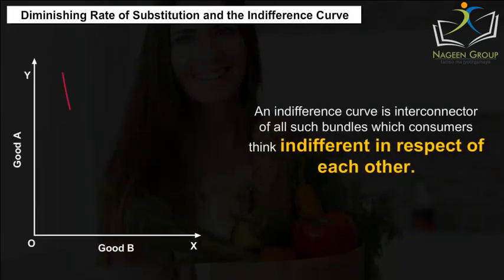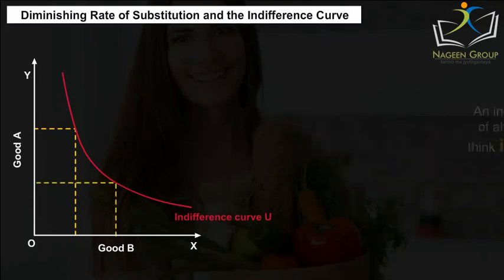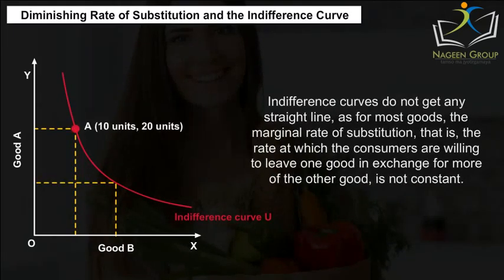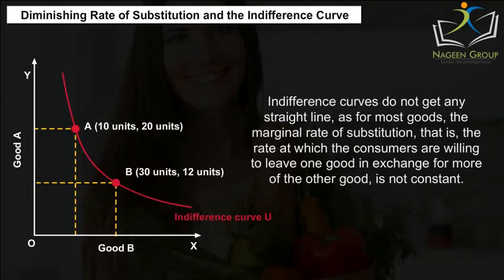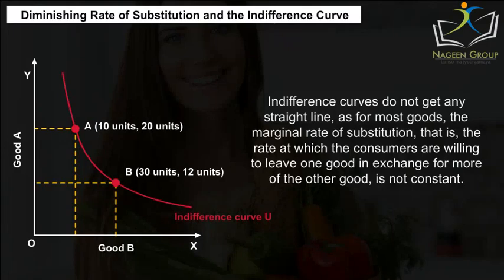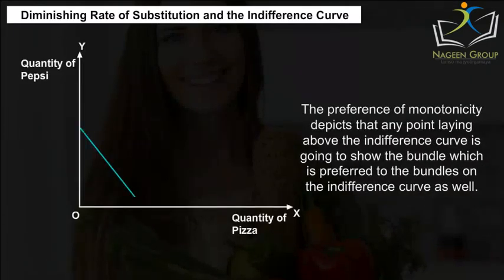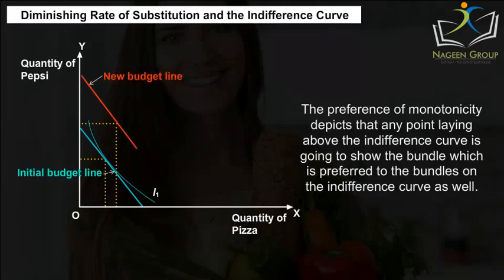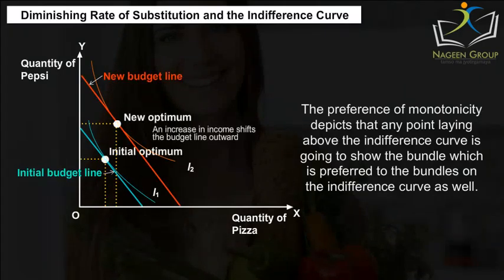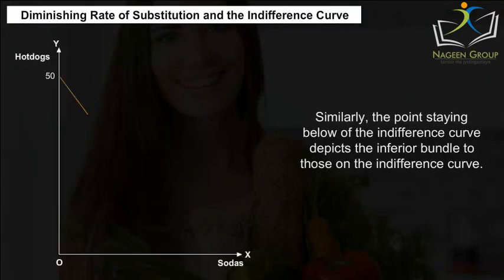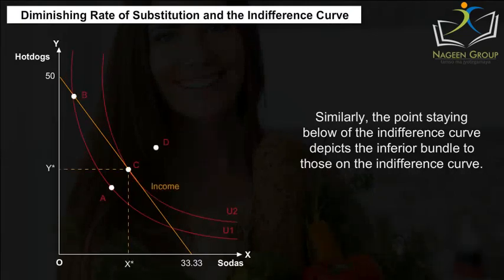An indifference curve is the connector of all such bundles which the consumer considers indifferent with respect to each other. Indifference curves are not straight lines, as for most goods the marginal rate of substitution — the rate at which consumers are willing to leave one good in exchange for more of the other — is not constant. The preference of monotonicity depicts that any point lying above the indifference curve shows a bundle which is preferred to the bundles on the indifference curve. Similarly, a point below the indifference curve depicts an inferior bundle relative to those on the curve.